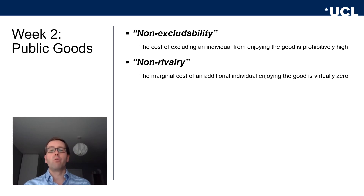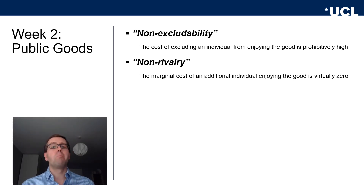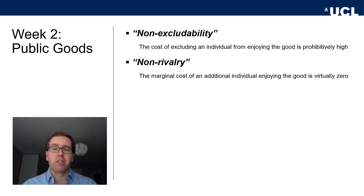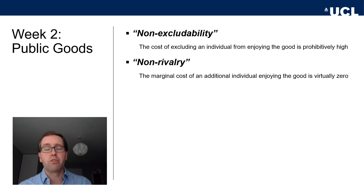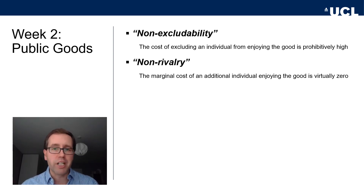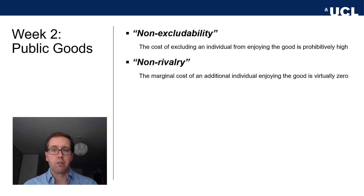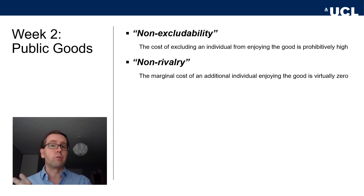Non-rivalry basically refers to rivalry in consumption. A good that is non-rivalrous is one where the marginal cost of adding additional consumers enjoying the good is virtually zero — we don't impact each other's enjoyment. A good example is this lecture video: once produced, the cost of broadcasting it to additional people is very low. Roads are another example — if not congested, many people can use them without affecting each other. But once congestion appears, it shifts from non-rivalrous to rivalrous consumption.